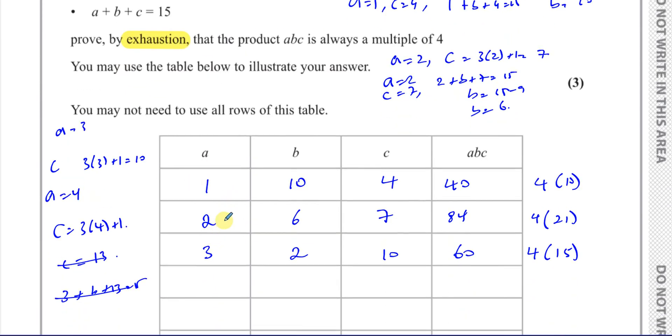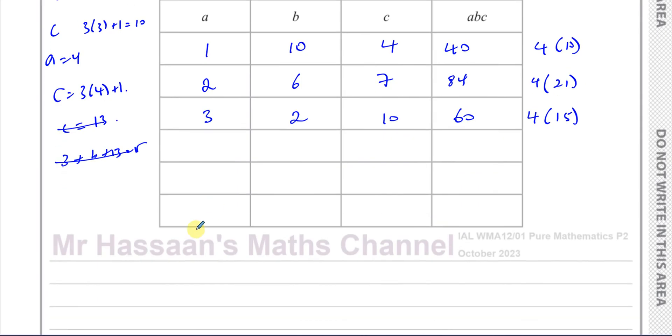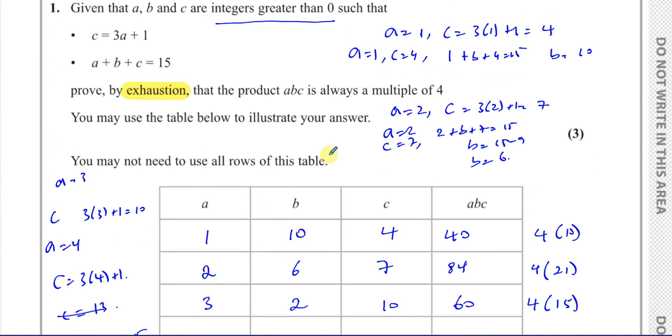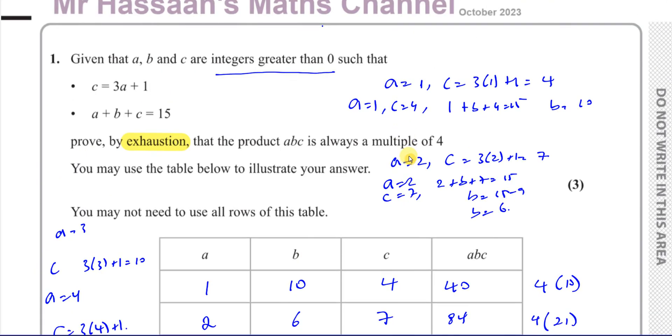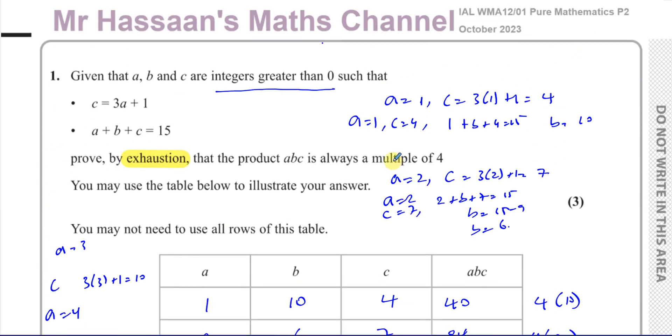We've exhausted all the possible values of A, B, and C if they're integers greater than 0. Those are the only possible values. And we can see in every case all our products are multiples of 4. So for all possible values of A, B, and C, A times B times C equals 4 times some integer, equal to a multiple of 4. So we've shown that ABC is always a multiple of 4. That's enough of the answer. That concludes this question from this paper.